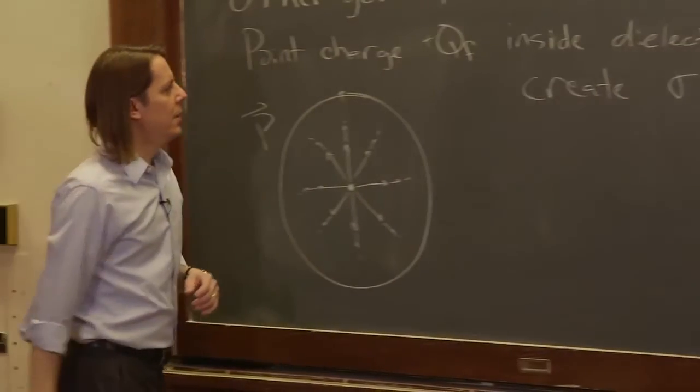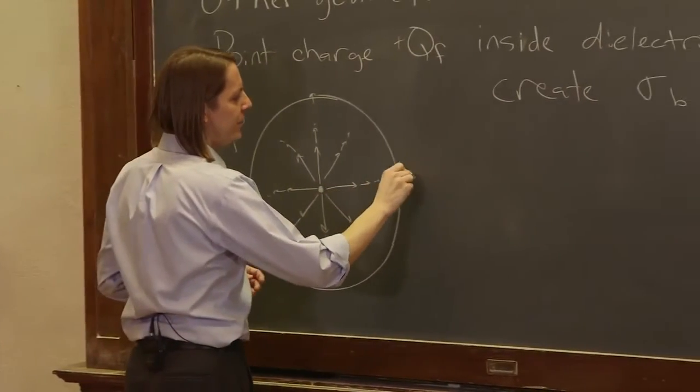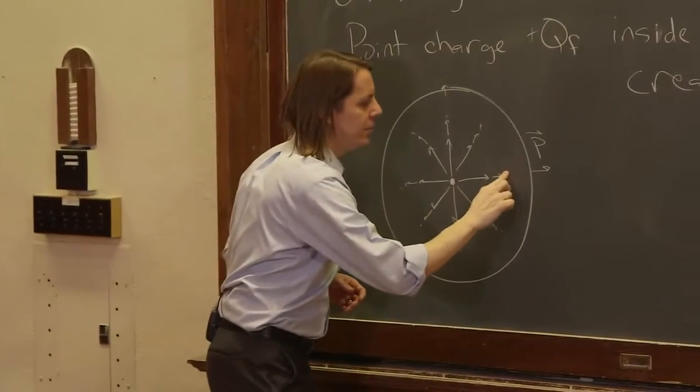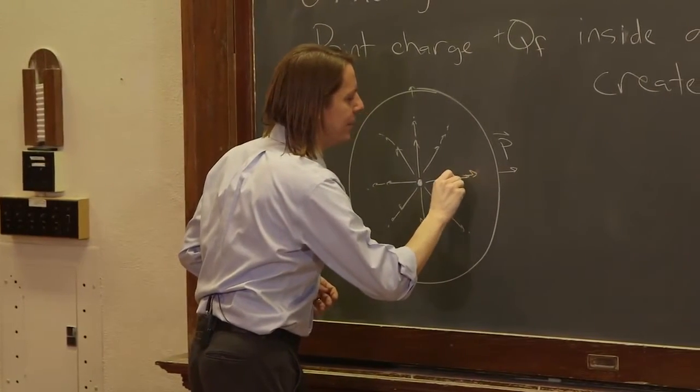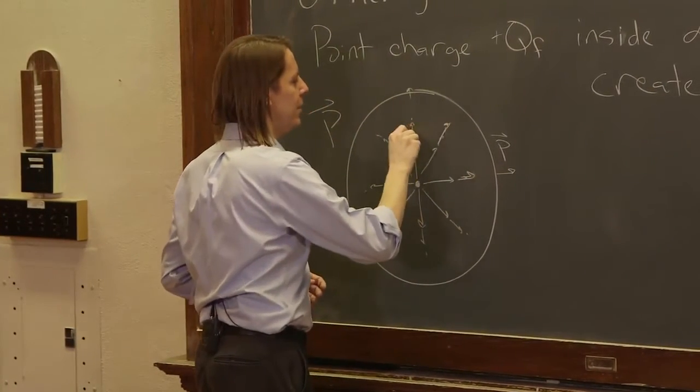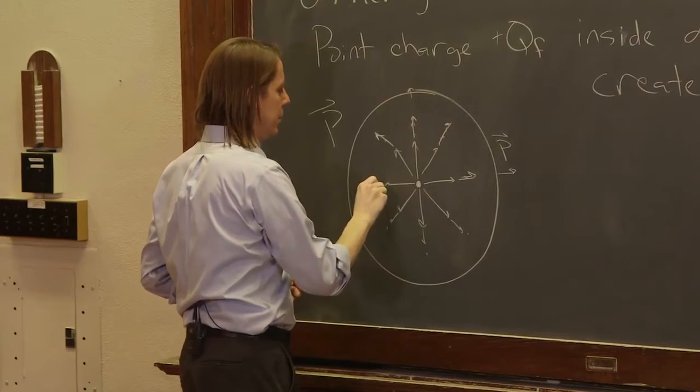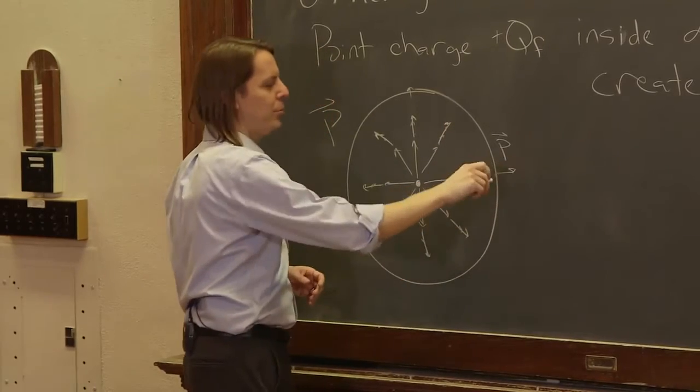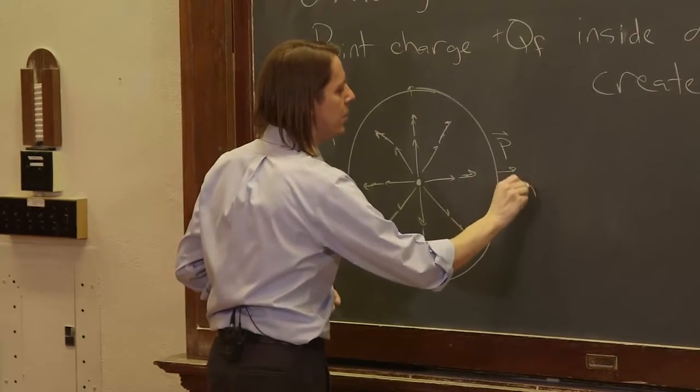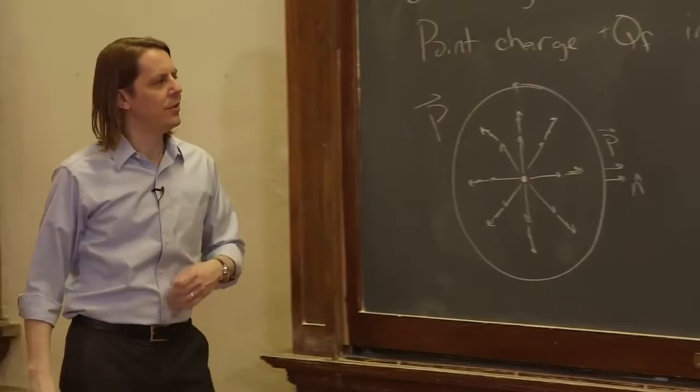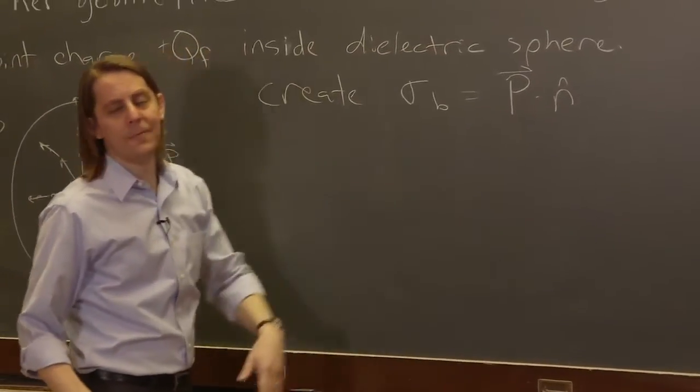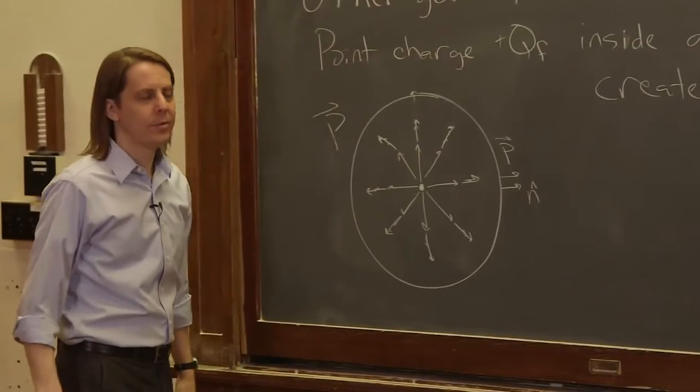So as long as there's some P vector that remains on the surface—I drew it decaying too rapidly. OK? I'm going to draw it like that. There you go. So there's some P field that remains on the surface. You dot it with a normal direction, which of course is the same direction. And you get that the charge density on the surface is just the value, the magnitude of the polarization at the surface.